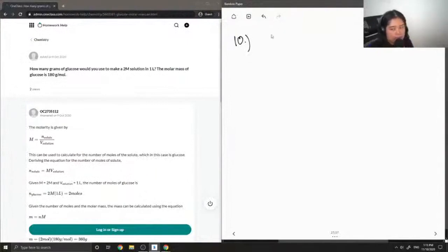Okay, so first I am going to write down everything that is given in the equation. So they gave us the concentration of the glucose solution, which is 2 moles per liter. They gave us the volume of that solution, which is 1 liter. And they also gave us the molar mass of glucose, which is 180 grams per mole. And we are looking for the mass.